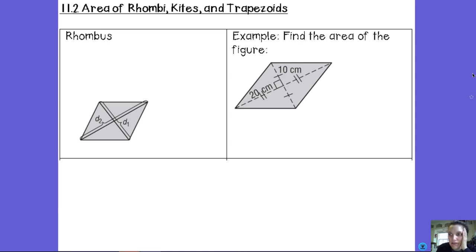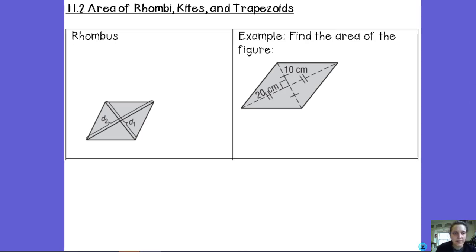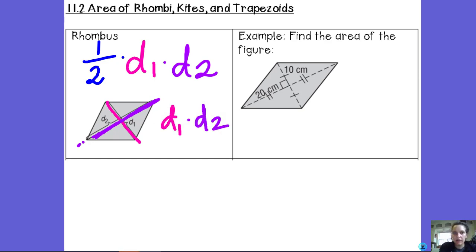Okay, so the formula for finding the area of a rhombus is one half times the length of the first diagonal, so diagonal 1, this whole entire diagonal, the length of that whole diagonal times the length of diagonal 2, the entire length of diagonal 2.